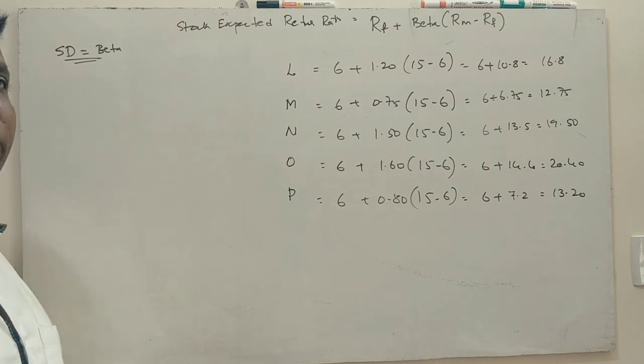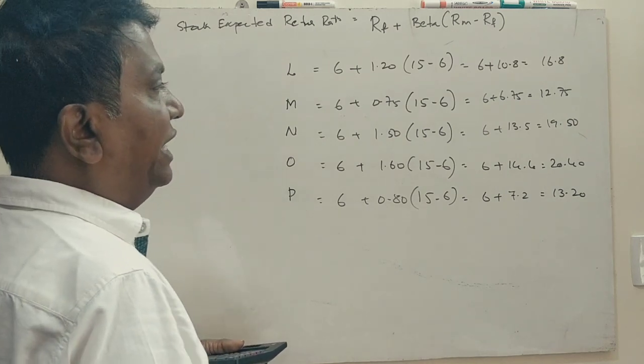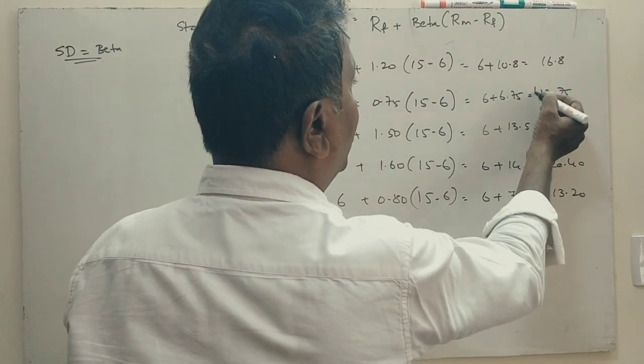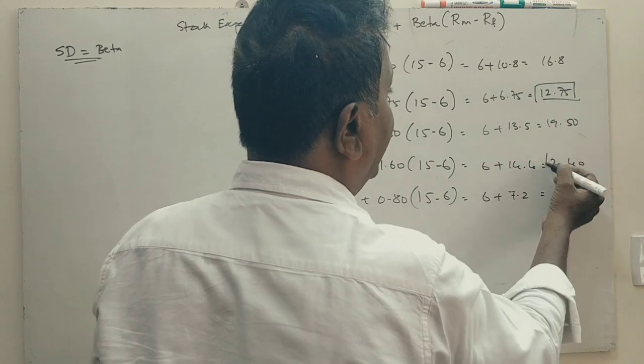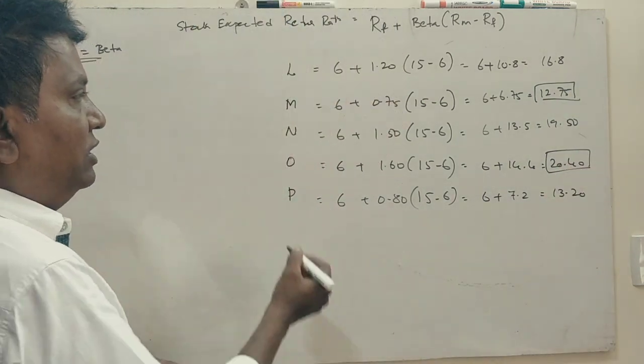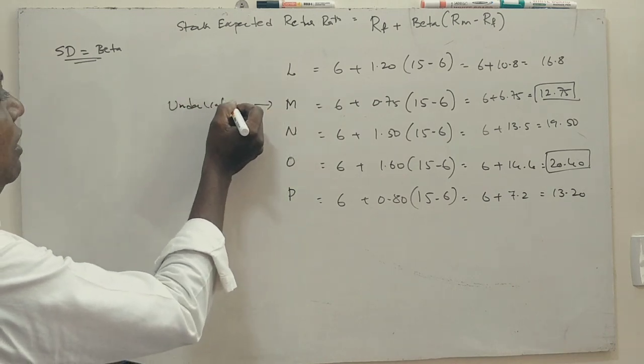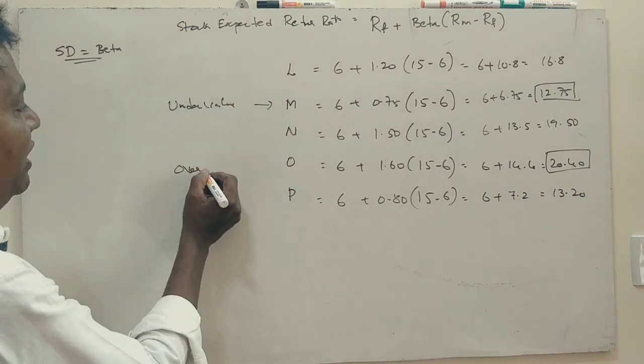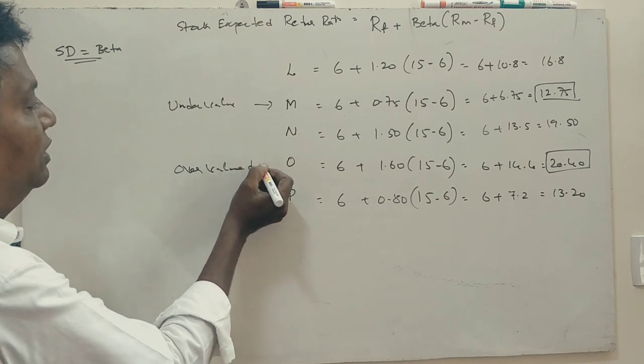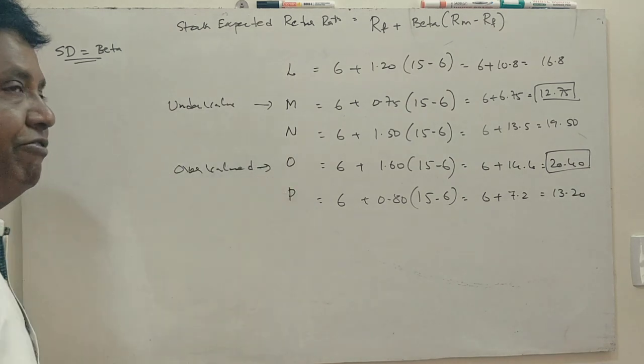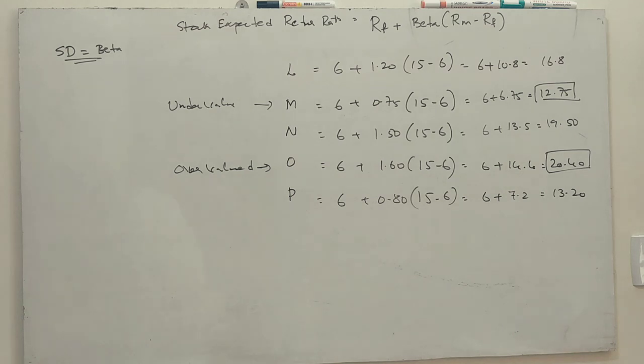Now this is the expected return. Overvalued and undervalued. The highest cost is 12.75, the highest cost is 20.4. So if you have undervalued, this is overvalued. Okay, now guys, thank you.